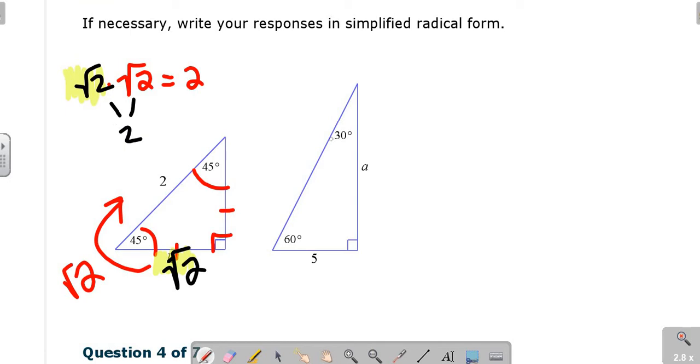Here, 30-60-90. Short leg, short leg root 3, short leg times 2. So to get A, it reads simply 5 times root 3, which is 5 root 3.